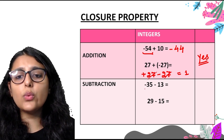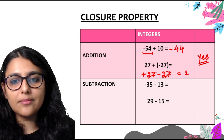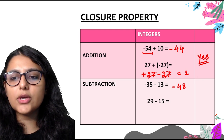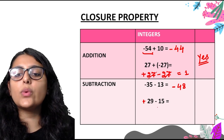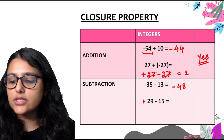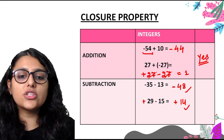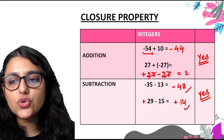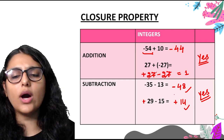Now for subtraction. We have minus 35 minus 13. Two negative signs mean the operation becomes addition: 35 plus 13 equals 48, and since both are negative, the answer is minus 48, which is an integer. Then we have positive 29 minus 15, which gives positive 14 — also an integer. In both cases the answer is an integer, so yes, the closure property holds true for subtraction. Note it down: closure property holds true for both addition and subtraction.